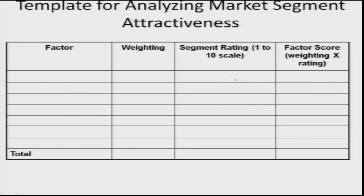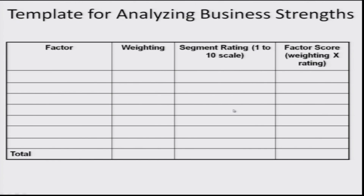Then we can do a segment rating — how a particular segment rates. That could be a geographical segment. Factors can include terms of payment, concentration of customer availability, distribution infrastructure, distinctiveness in the customer mind, and we can give weights to these. Then we can see how the western region compares with respect to the eastern region, and accordingly we can produce two types of scores which can be compared.